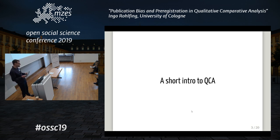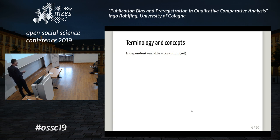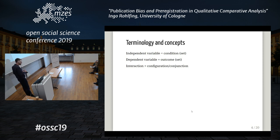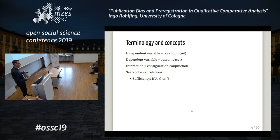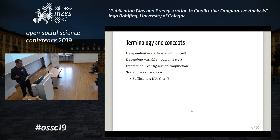Just a very short introduction to QCA terminology. We speak of conditions — a condition set, the X, you can think of as the independent variable. Then we have the outcome set. There might be interactions, called configurations or conjunctions of multiple condition sets. We look for set relations, and the two basic types are sufficiency and necessity. Sufficiency means: if there is a condition or conjunction, then we have the outcome. That's the main purpose of a QCA study — to get a sufficient result, to know conditions that produce the outcome.